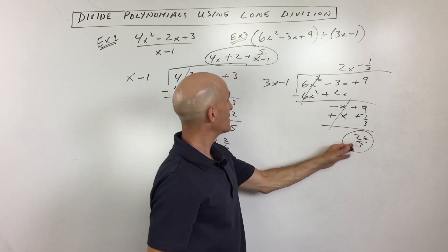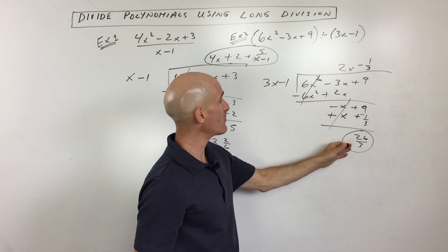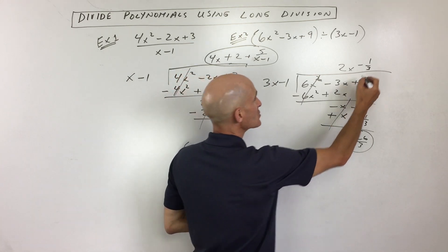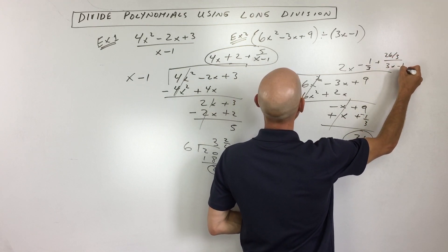What do you do with the remainder? See how this degree is degree 0, this is degree 1, this is lower than this. So that's the remainder. We put the remainder over the divisor. So I'm just going to put over here plus 26 thirds over 3x minus 1.